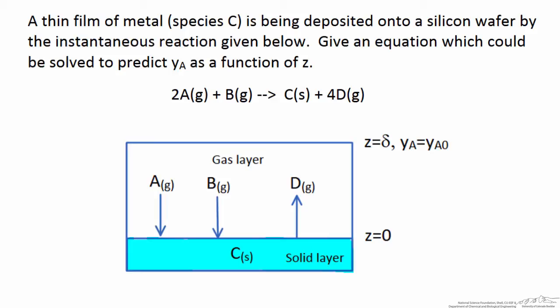If you look at our reaction we have 2A in a gaseous state and it is fluxing through this gas layer down to the surface, along with B, also in a gaseous state, and these two react to form C and 4D, and D is a gas and it is fluxing away from the surface.